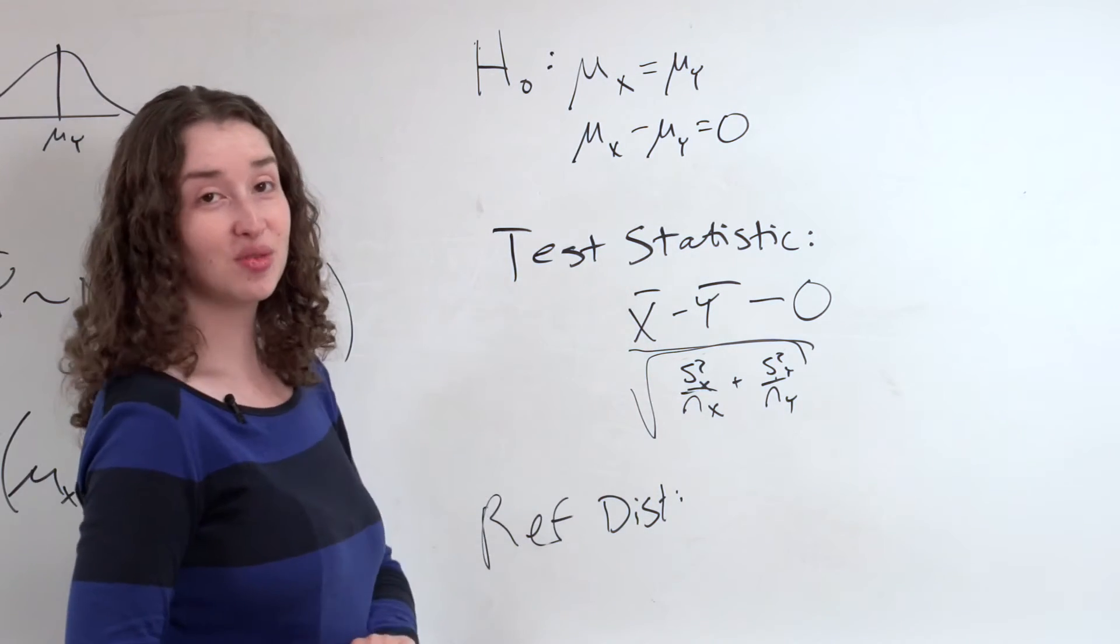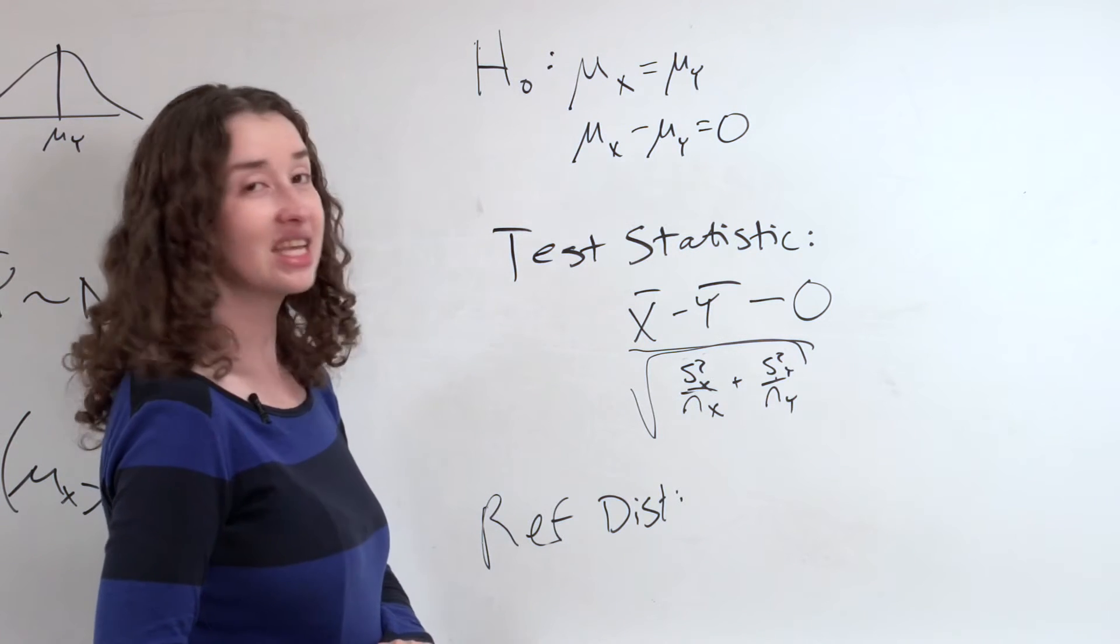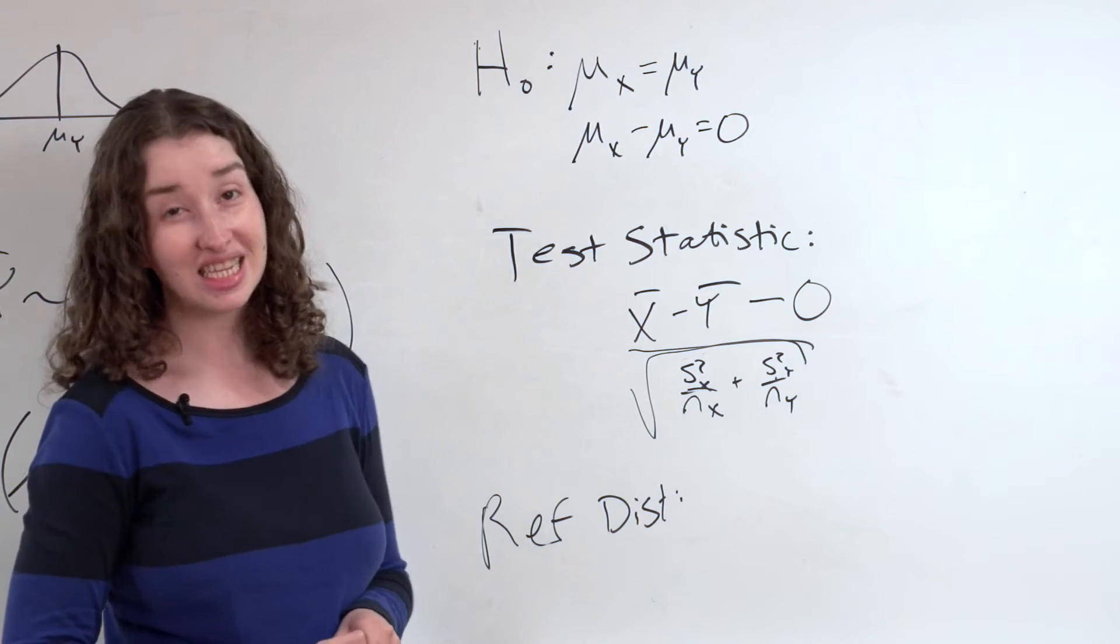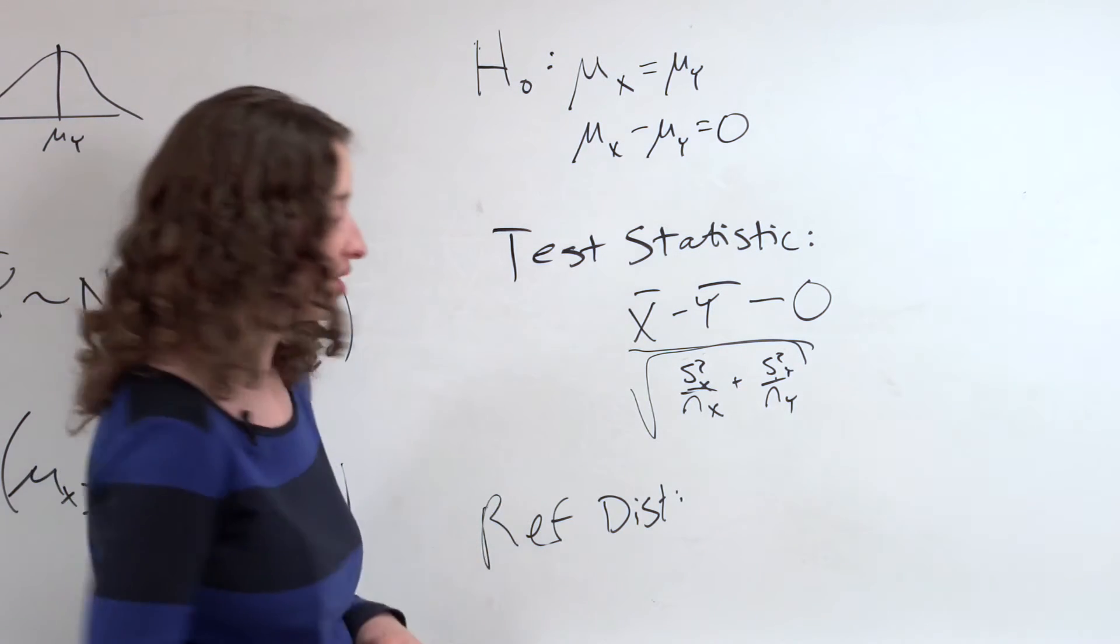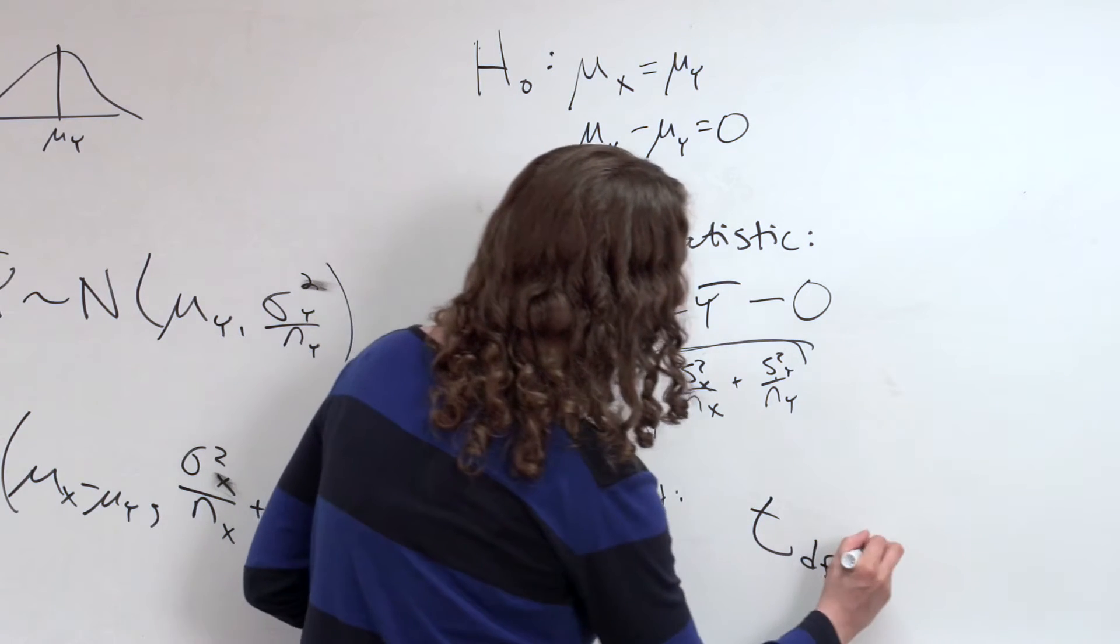What is the reference distribution for this statistic, this t statistic? Well, it's not technically going to be normal anymore. And it turns out that it's not technically a t-distribution either, but it's really close to one. So we can think of it as a t-distribution approximately with a certain degrees of freedom.